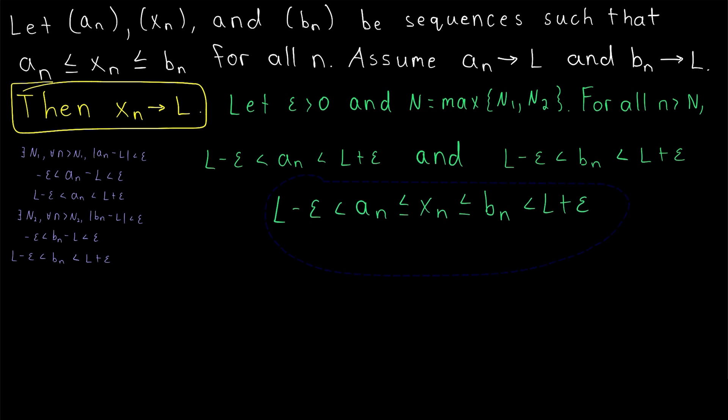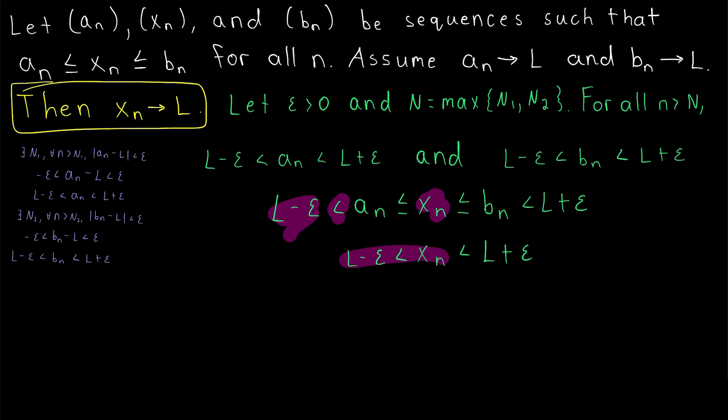Now, we're primarily concerned with x_n, so we could go ahead and drop a_n and b_n from this inequality. Doing that leaves us with x_n is greater than L minus epsilon, and x_n is less than L plus epsilon.